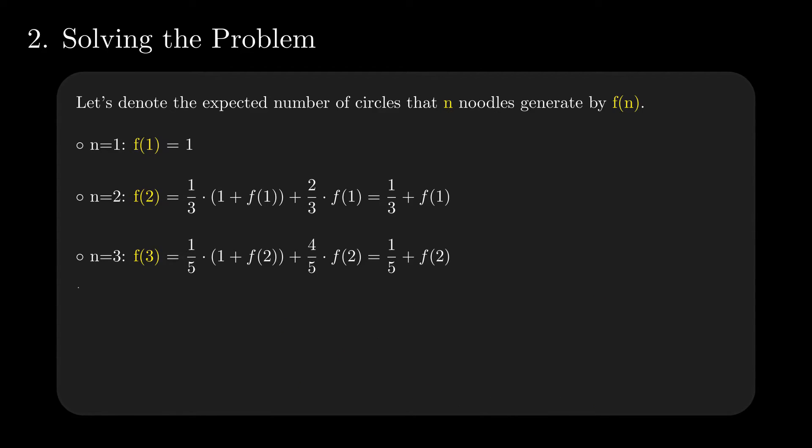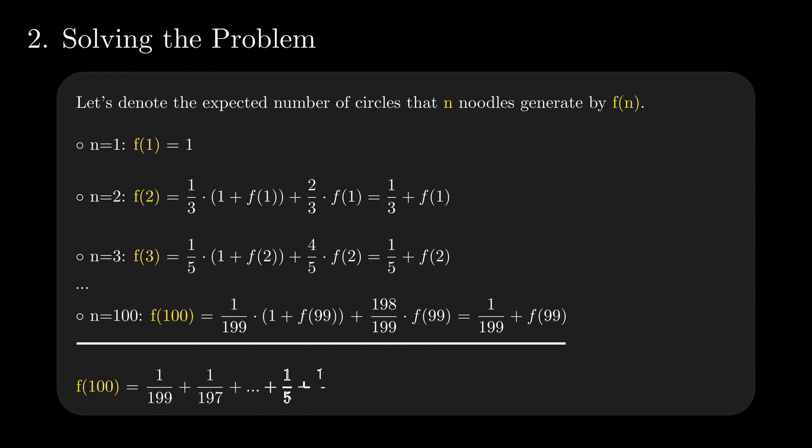We should fast forward to the 100 noodle scenario since we better grasp the problem now. With one fixed noodle end, the first move results in one circle and f(99) expected circles if we choose the pair of the first end. It happens with the probability of 1 out of 199. In the other 198 out of 199 cases, we have essentially 99 noodles, hence a total of f(99). Recursively replace the values of f for 99, 98, and so on, until the value 2. This results in the sum of the reciprocals of all odd numbers between 1 and 200.